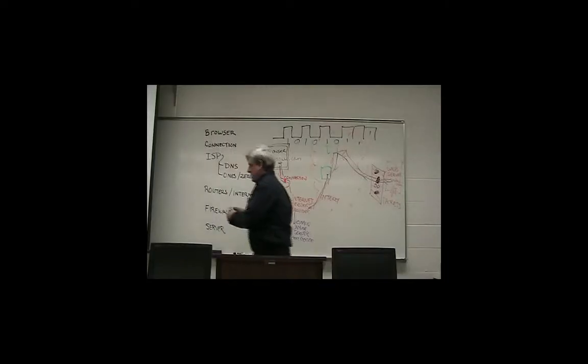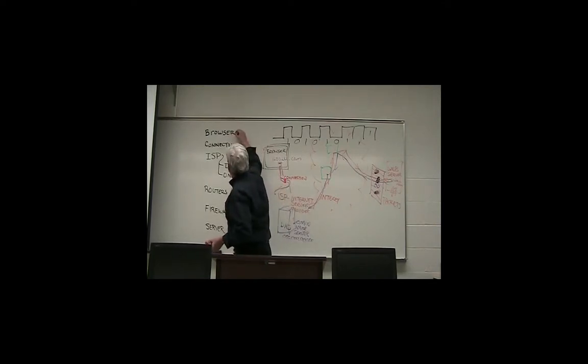If we look at this list here, a graphic representation would go from the browser into your connection, connection to the ISP, the DNS. It would go back, come back down to the routers, routers to the firewall, firewall to the server.